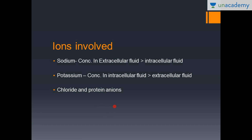The ions involved in generation of the resting membrane potential include sodium, potassium, and others. You should remember the three main ions: the sodium ion, whose concentration is much greater in the extracellular fluid compared to the intracellular fluid; the potassium ion, whose concentration is much greater in the intracellular fluid compared to the extracellular fluid. The main anion of the extracellular fluid is the chloride anion, and the main anion of the intracellular fluid is the protein anion.